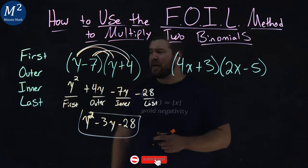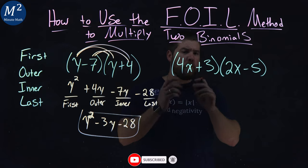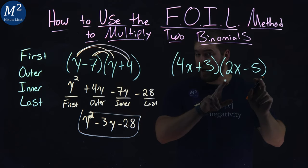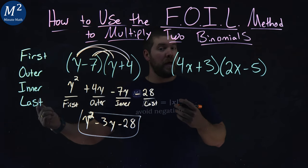So let's do the same thing again for extra practice in the second one. A little more difficult. 4x plus 3 times 2x minus 5. Again, we're going to follow the FOIL method. First, outer, inner, and last.